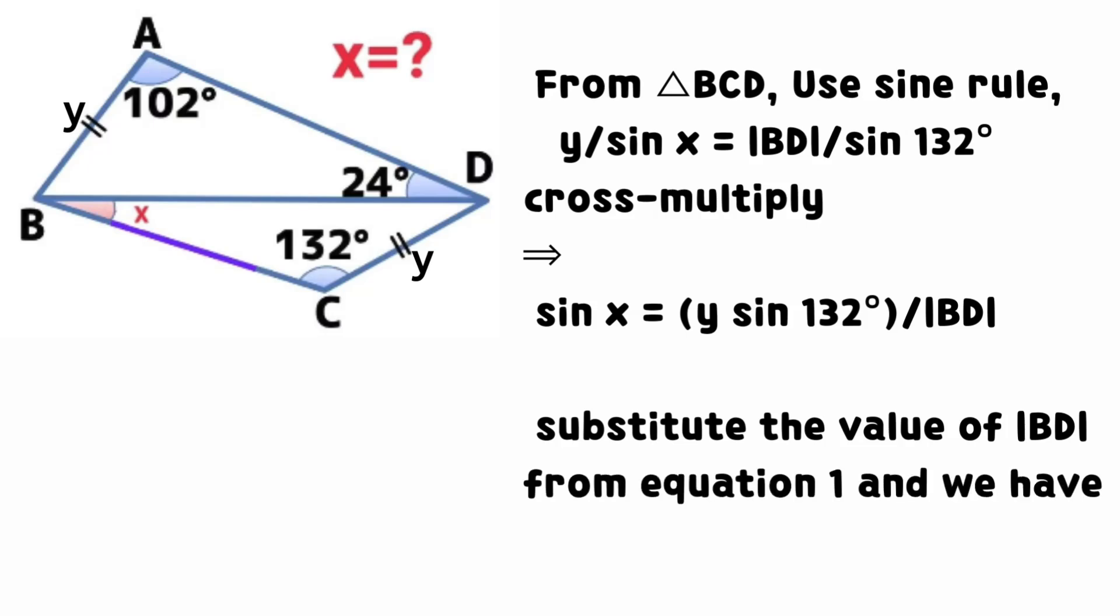Cross multiply. It implies that sine x equals the product of y and sine 132 degrees all divided by line BD.